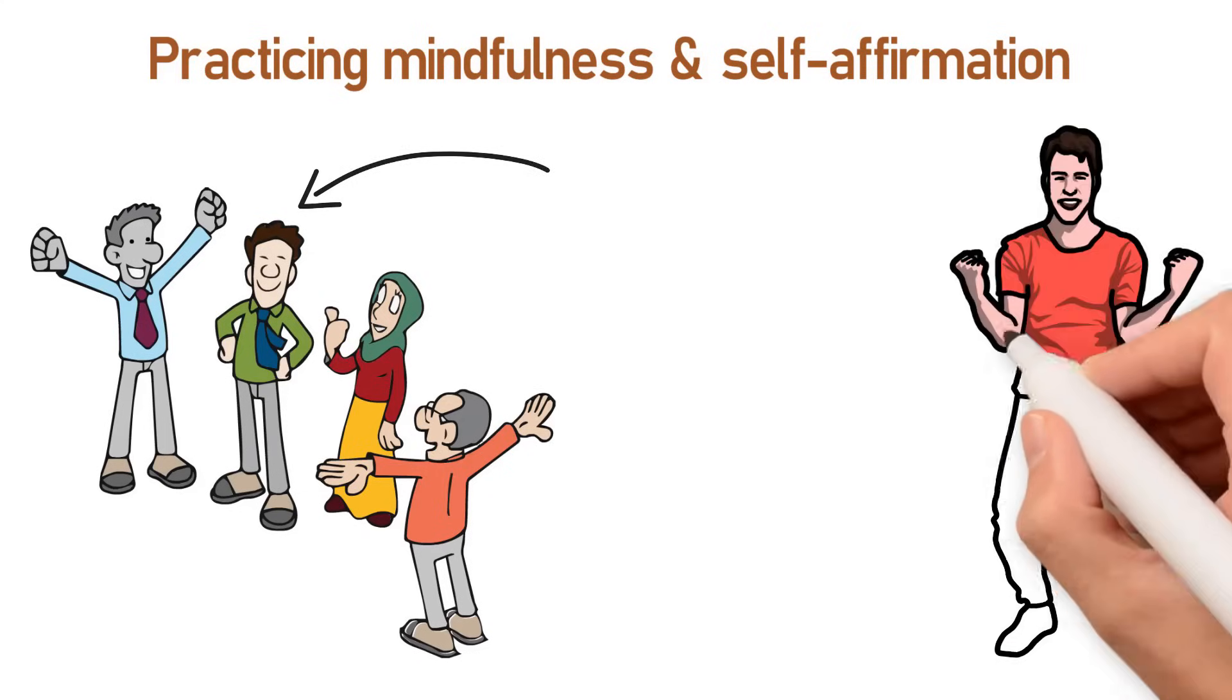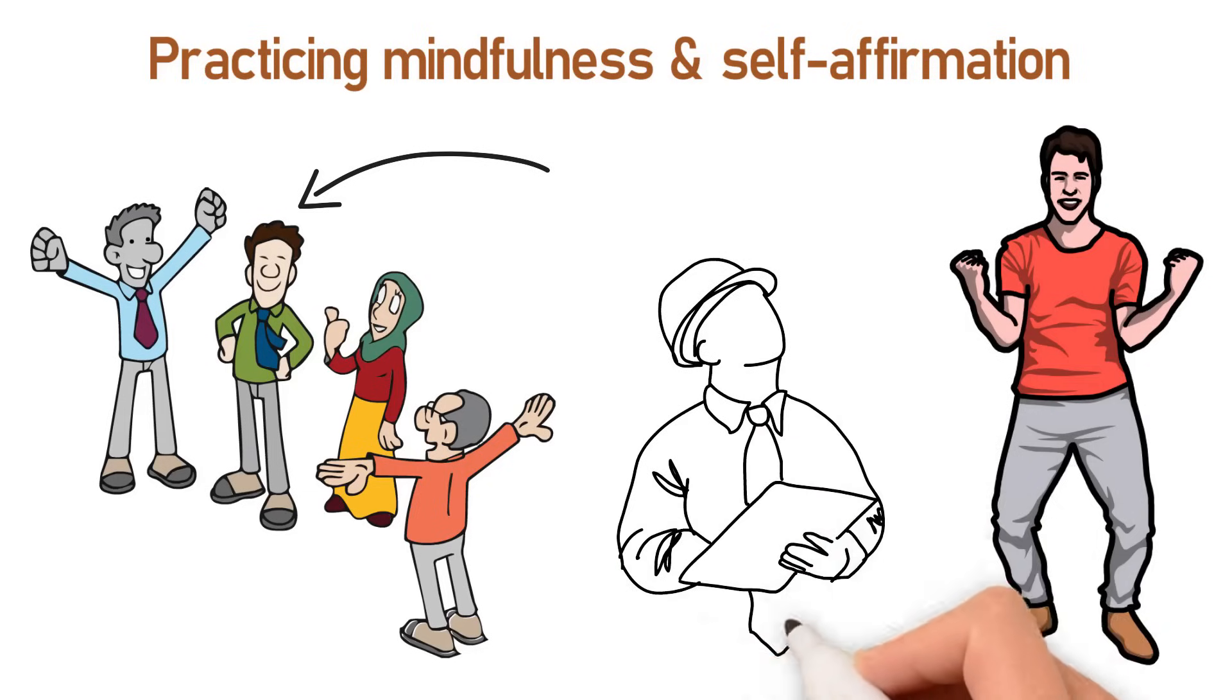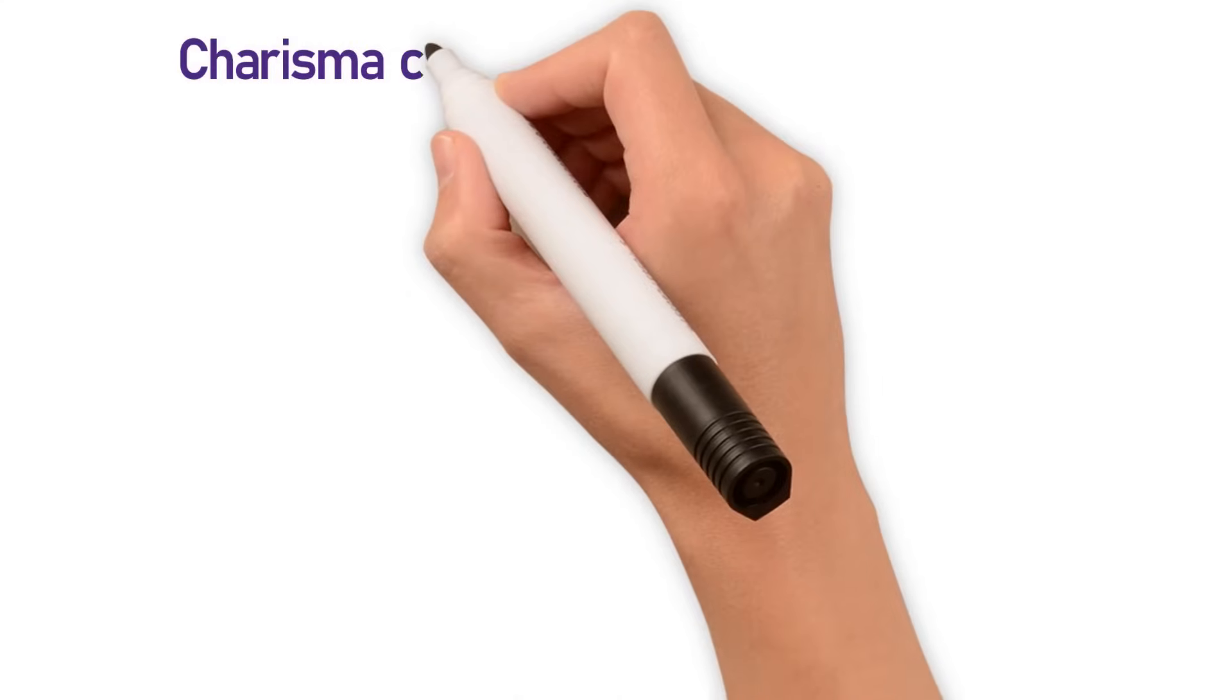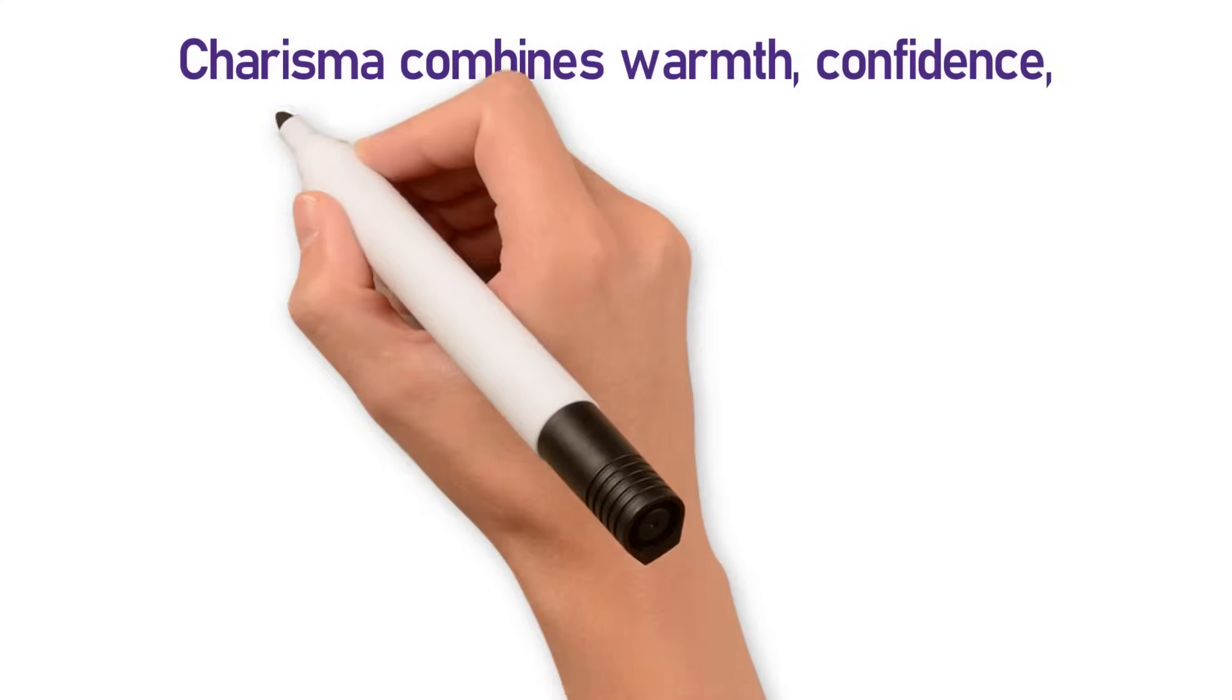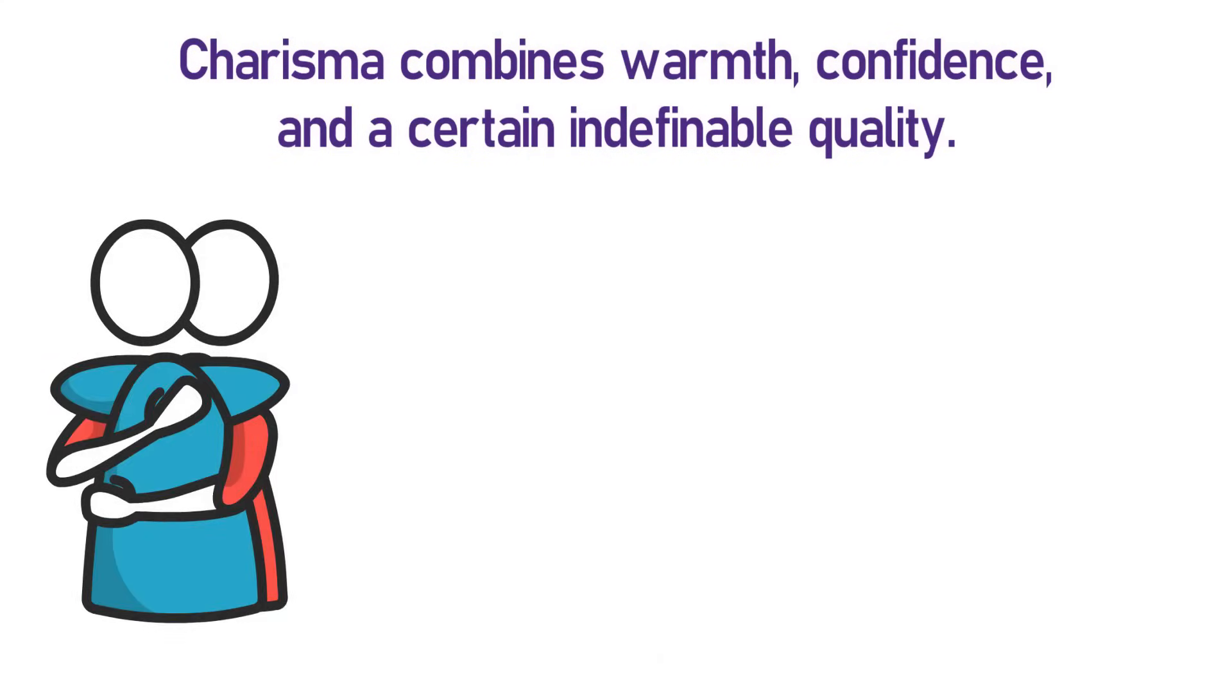Charisma is often seen as an innate trait. But Lowndes breaks down this misconception, showing how it can be cultivated. Charisma combines warmth, confidence, and a certain indefinable quality that makes others naturally gravitate towards you.